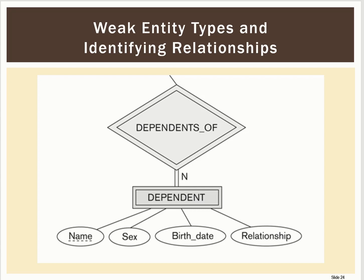For example, we might have two dependents whose name is John, whose sex is male, that were born on the same day, and that they were the son of the employee. How could I distinguish one John from the other? I might need to know the key of the strong entity — the employee ID to which this is associated. So perhaps with the employee ID, I'll be able to know that John for that employee ID is a unique dependent, and John for a different employee ID would be another unique dependent.